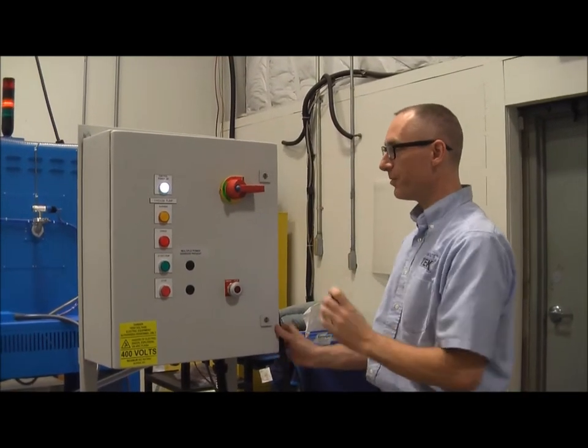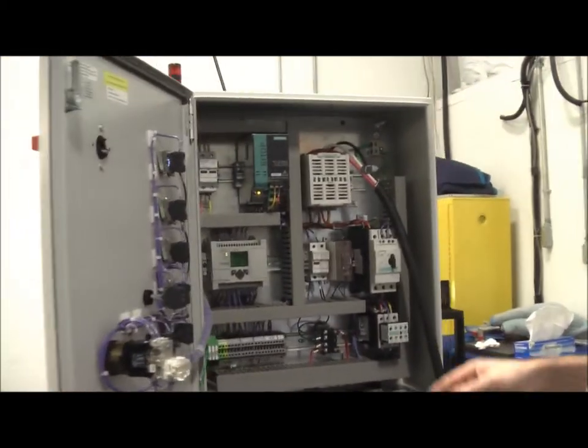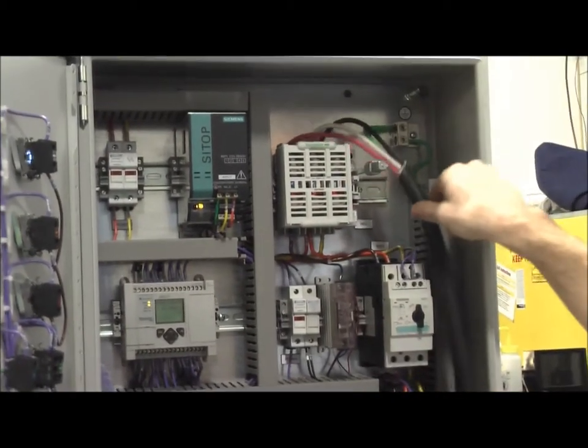Use a straight-slot screwdriver to open the control panel. Inside the control panel, the main power is connected here—three-phase plus a ground.